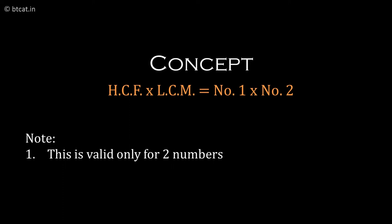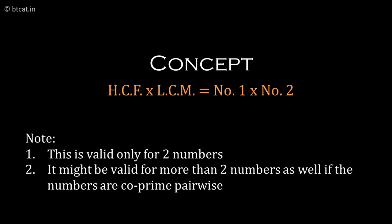For three or four numbers, it might be applicable sometime—whenever all the numbers three or four or five I have taken are pairwise co-prime numbers. There should not be anything common in any two of them. Only then our rule will be valid for more than two numbers as well. But this rule is always valid for two numbers.